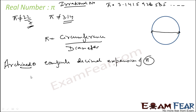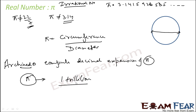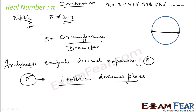In the current world, with the advancement in computer technologies, the value of Pi has been computed till almost 1 trillion decimal places — not even billion, 1 trillion decimal places. This is using high speed computers.